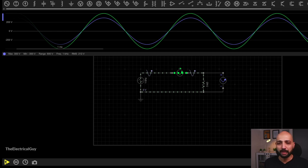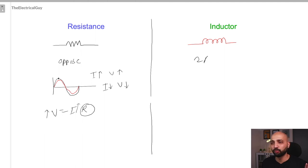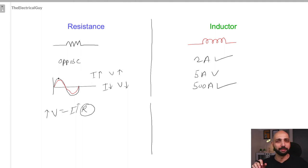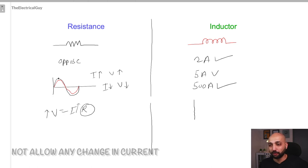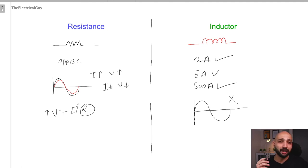Now let us talk about the inductive circuit. Inductors do not behave the same as a resistor. An inductor is okay with a constant current passing through it — whether 2 ampere, 5 ampere, or 500 ampere continuously, no problem. But it will not allow any change in the current. So when alternating current passes through an inductor, it opposes that change and tries to maintain the current constant.